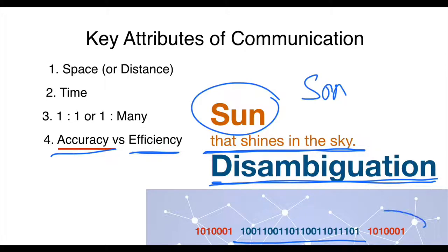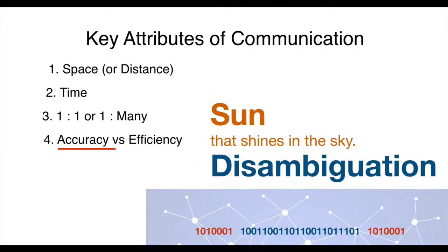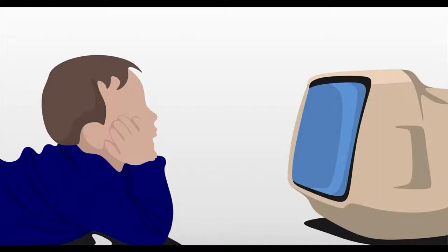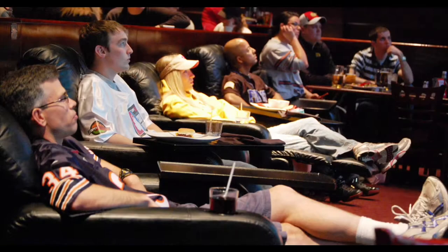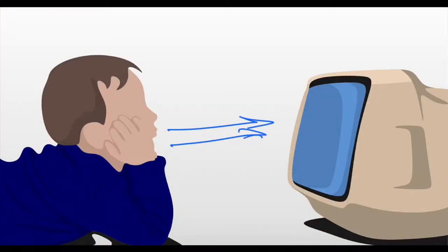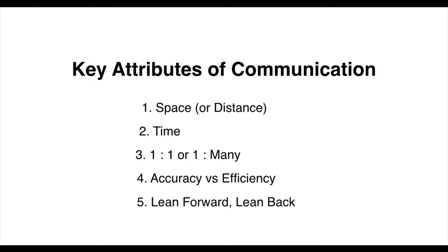This idea of disambiguation also exists in digital communication, when we add certain extra bits to make sure that as our communication hops across the internet it doesn't lose accuracy. The next attribute we looked at is whether communication is a lean-forward mode or a lean-back mode — like when you are watching television or cinema. Lean-forward mode means the communication is engaging and keeping the user actively engaged. These were the attributes: space-time, one-to-one or one-to-many, accuracy versus efficiency, and lean-forward versus lean-back modes.